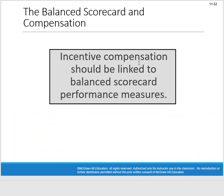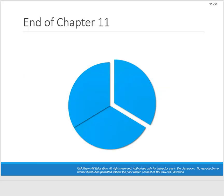Incentive compensation should be linked to balanced scorecard performance measures. To summarize: the balanced scorecard has no actual scorecard and no score — it's simply about using multiple performance measures and not having tunnel vision focused only on financial results. We should measure the company and evaluate employees on multiple measures. That's the end of Chapter 11. Please contact me if you need any help on the concepts in this chapter — I'm here to help. Good luck.